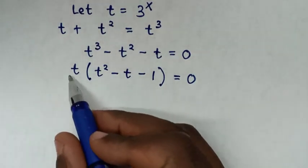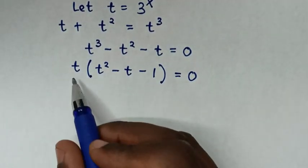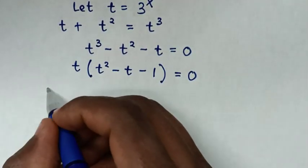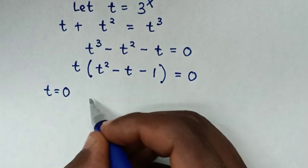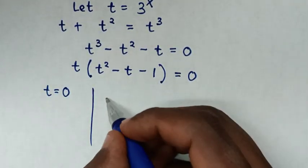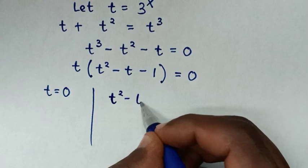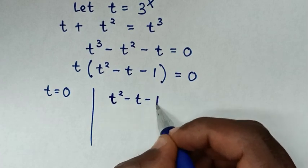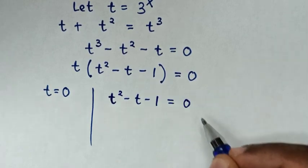From here we have two solutions: the first solution is t equals 0, and the second solution is t squared minus t minus 1 equals 0.